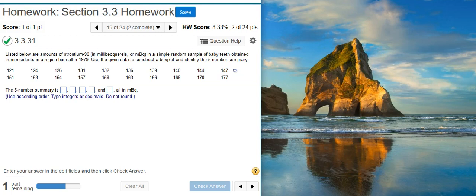Here's our problem statement. Listed below are amounts of strontium-90 in millibecquerels in a simple random sample of baby teeth obtained from residents in a region born after 1979. Use the given data to construct a box plot and identify the five-number summary.